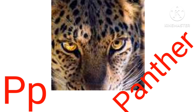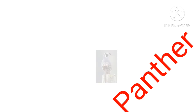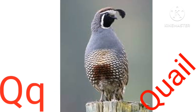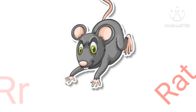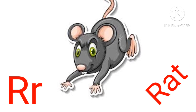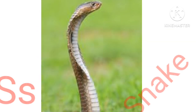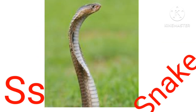P for Panther. Q for Coil. R for Red. S for Snake. T for Tomato.